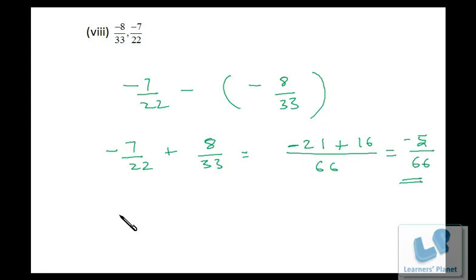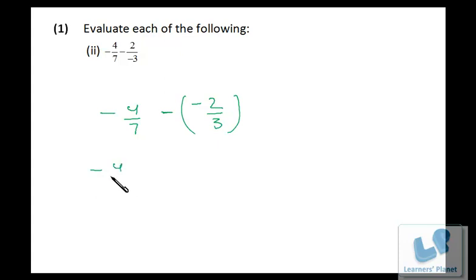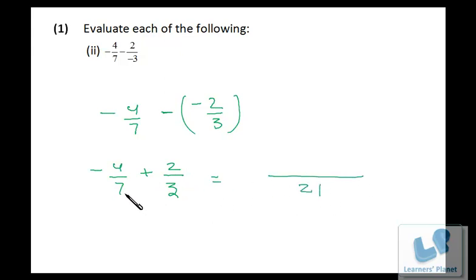So the problems are really very simple — you need to have some practice. You can print the worksheets and do the problems to gain confidence. Now we have to evaluate: it's minus 4/7 minus, and this negative sign can be shifted to the numerator. So it's minus 4/7, and minus and minus will be plus. Take LCM — LCM of 7 and 3 is 21. Seven times three is 21, so three times 4 is 12 with a negative sign. Then plus 3 times 7 is 21, so seven times 2 is 14. So it's 2/21.